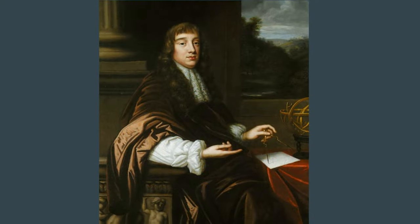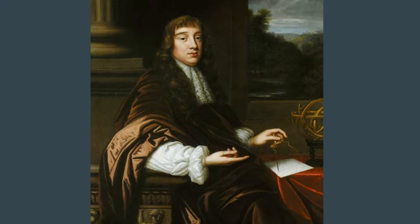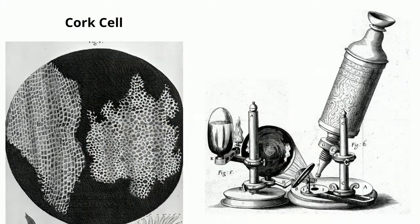Robert Hooke is credited with naming cells. In 1665, after using a crude microscope and looking at thin pieces of cork, he saw structures that looked like cells in a monastery, so he named them cells. Although he named cells, his understanding of cells was very limited.